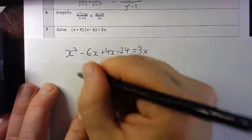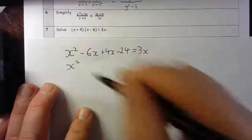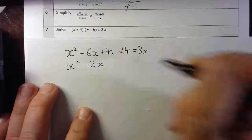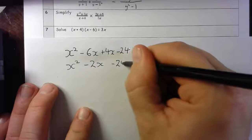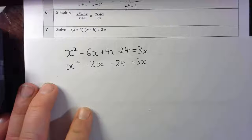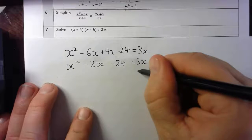Going to collect the like terms, so that gives me x squared minus 6x plus 4x gives me minus 2x take away 24 equals 3x. Just collecting like terms.